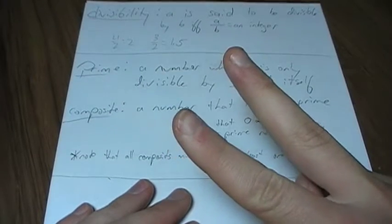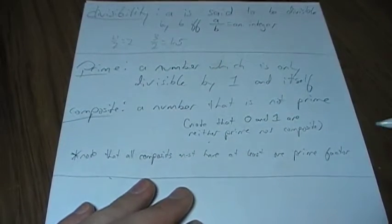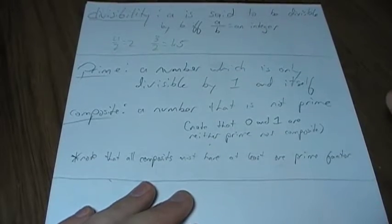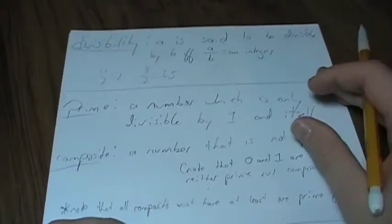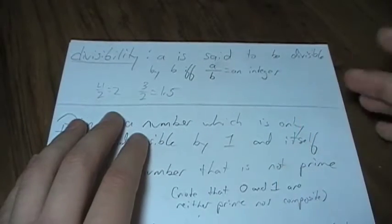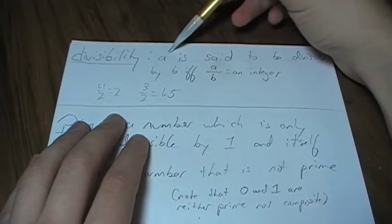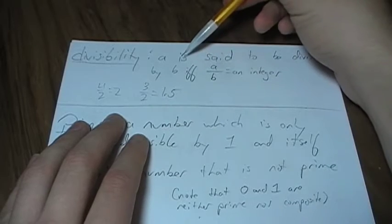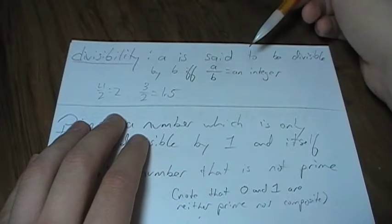In this world, there are two types of numbers: primes and composites. In order to understand them, we must first understand the concept of divisibility. You probably already know this. It's very simple. A number A is said to be divisible by a number B if and only if A over B is an integer.